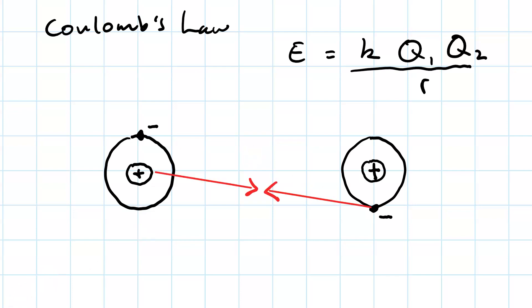So the nucleus of the atom on the left is attracted to the electron of the atom on the right. And the nucleus of the atom on the right is attracted to the electron of the atom on the left.